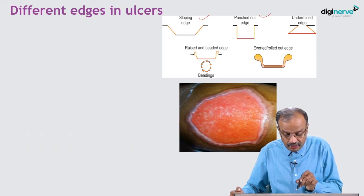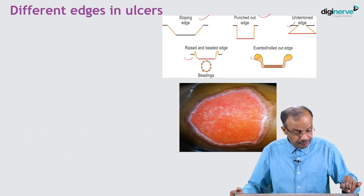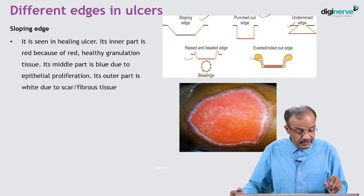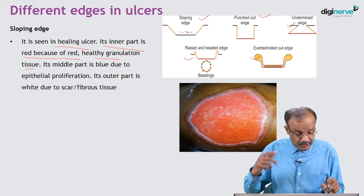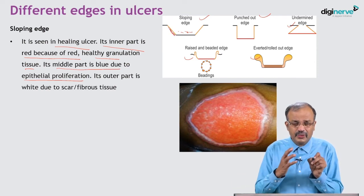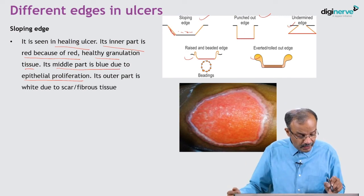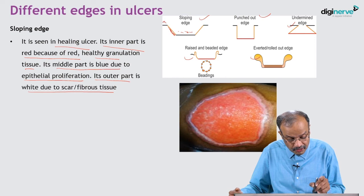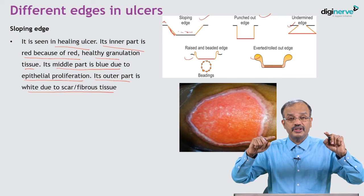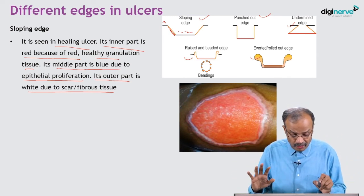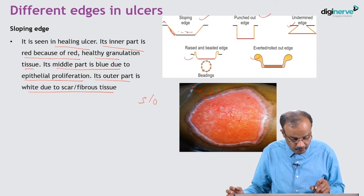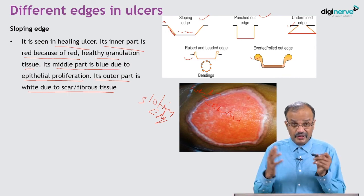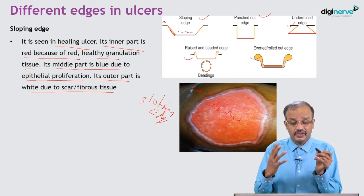Looking at the diagram, the edge types are: sloping edge, punched out edge, undermined edge, raised and beaded edge, and inverted edge. Sloping edge is seen in a healing ulcer. Its inner part is red because of red granulation tissue; its middle part is blue due to epithelial proliferation - new epithelialization occurs because it is healing; and its outer part is white due to scar tissue formation. So outer part is scar, middle part is blue epithelialization, inner part is red granulation tissue. That is typical sloping edge - immediately you can say it is a healing ulcer. This edge gives the clinical diagnosis.